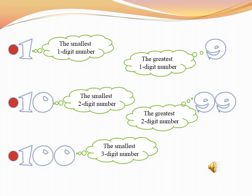Let's start the topic: comparing numbers. Before starting, can you tell me what is the smallest 1-digit number? 1 is the smallest 1-digit number, and the smallest 2-digit number is 10. And what is the smallest 3-digit number? 100. And what is the greatest 1-digit number? 9. 9 is the greatest 1-digit number.